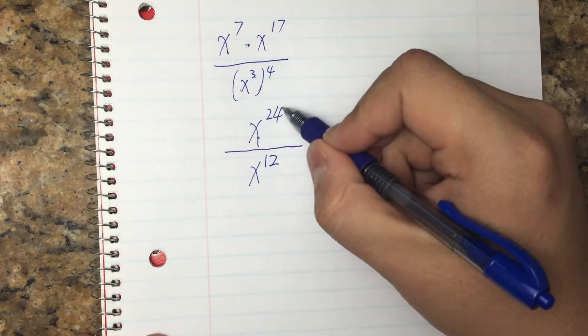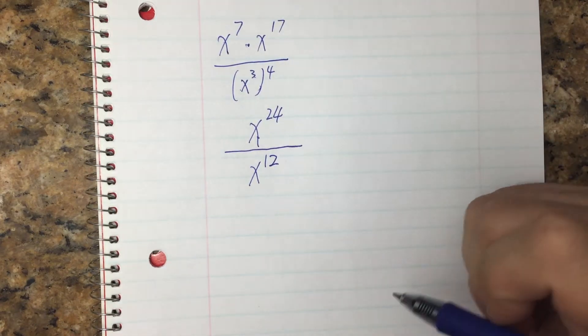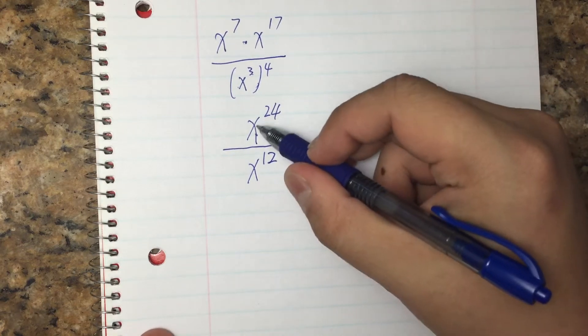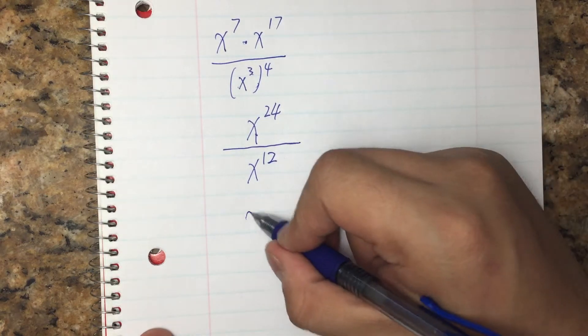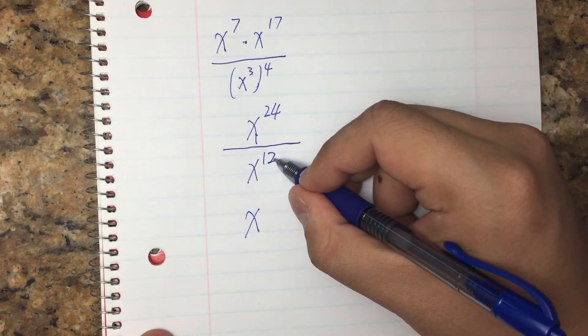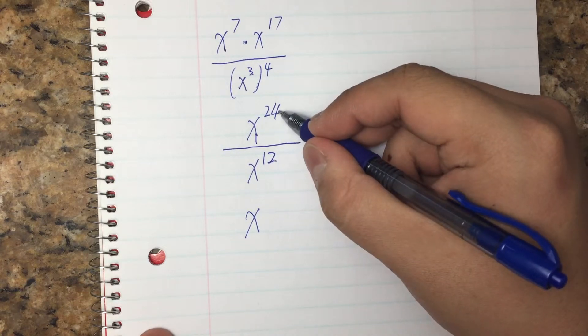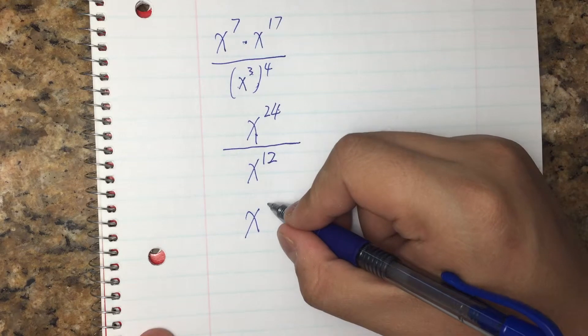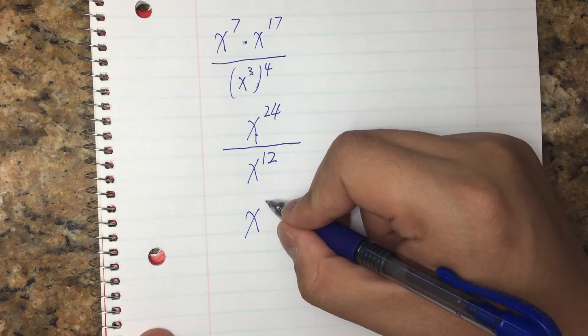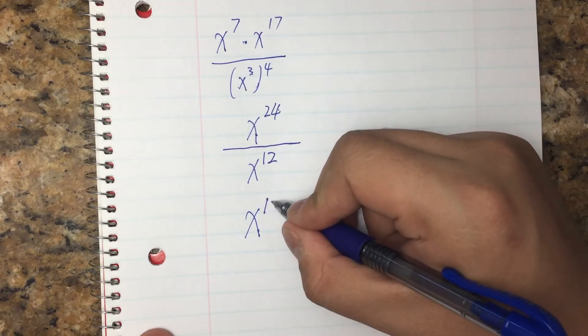Now, we have x to the 24 divided by x to the 12th power. Division, we have same base, keep the base and subtract. 12. Subtract from 24. 24 minus 12 also, in other words, gives you 12.